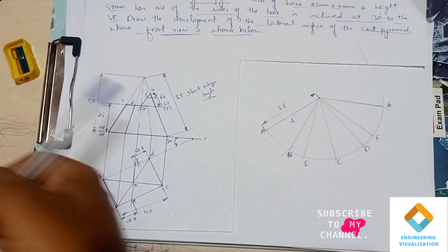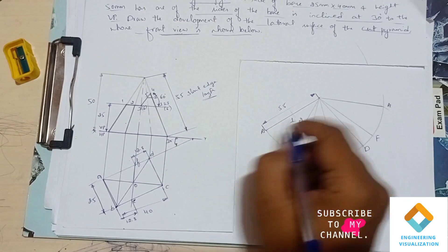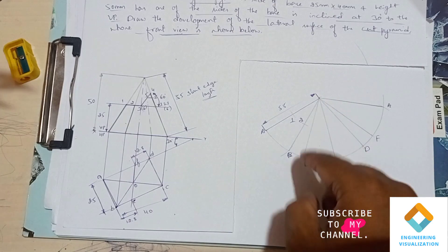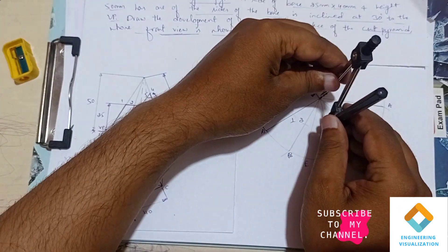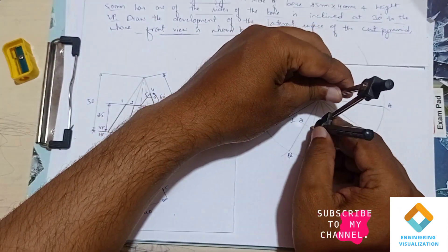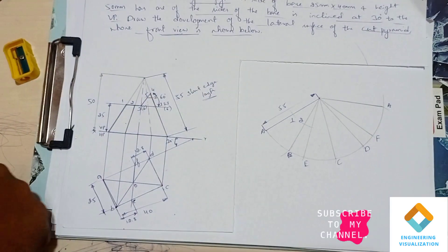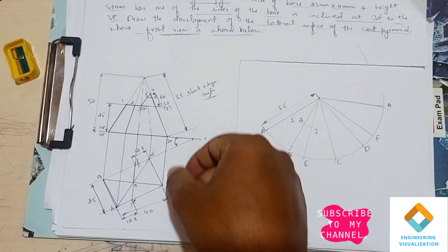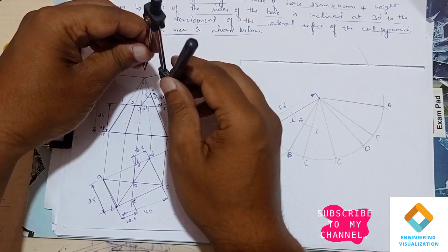In the same way, point number three is there on the E. Measure the same, it is also of the same length, that is one, two, three. Measure and cut it.